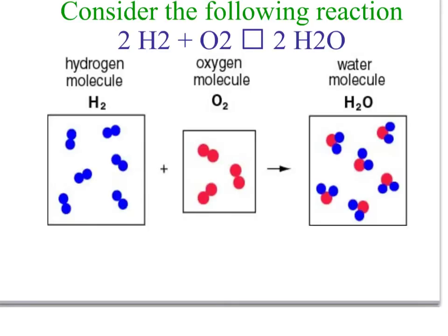First we'll review the reaction of hydrogen plus oxygen combining to form water. We'll look at the balanced reaction: two hydrogen molecules, which is diatomic, plus one oxygen molecule, which is diatomic as well, yields two molecules of water.